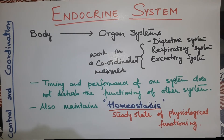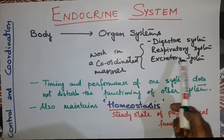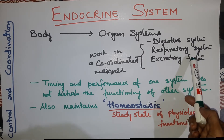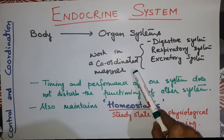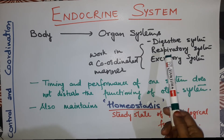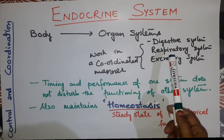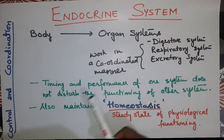In this video I am going to explain the endocrine system — specifically an introduction to it. In our body there are so many organ systems: the digestive system, respiratory system, excretory system, and others. All these systems work in our body in a coordinated manner, without disturbing the functioning of other organ systems, and they keep working toward the ultimate goal of keeping the living organism able to survive. The timing and performance of one system does not disturb the functioning of another system.